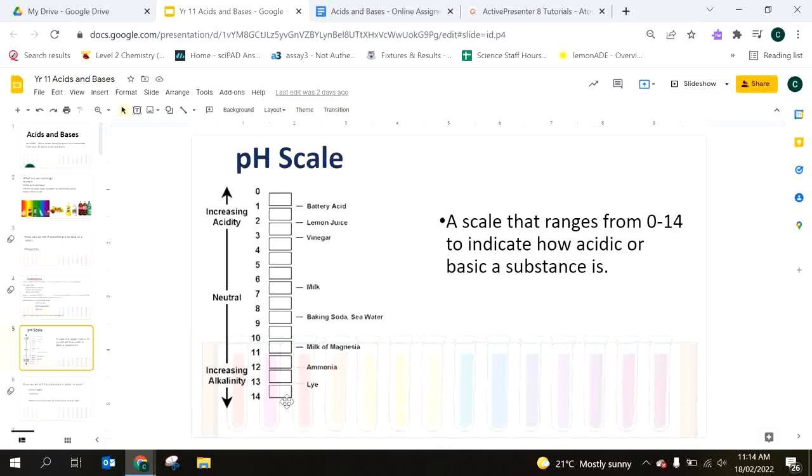Our pH scale goes from zero to 14, with seven in the middle, seven being neutral.